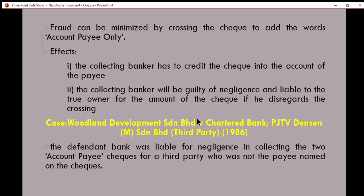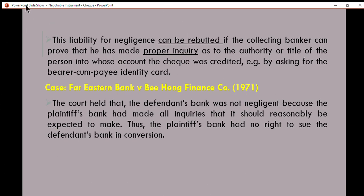In the case of Woodland Development Sendirian Berhad against Chartered Bank, the defendant bank was liable for negligence in collecting two 'account payee' checks for a third party who was not the payee named on the check. However, the liability for negligence can be rebutted if the collecting banker proves they made proper inquiry as to the authority or title of the person into whose account the check was credited — for example, by asking for the bearer's identity card.